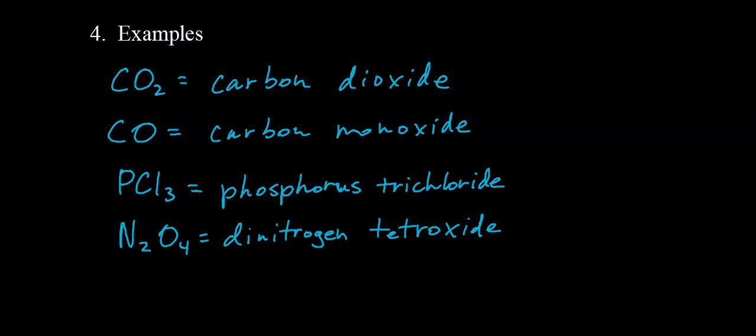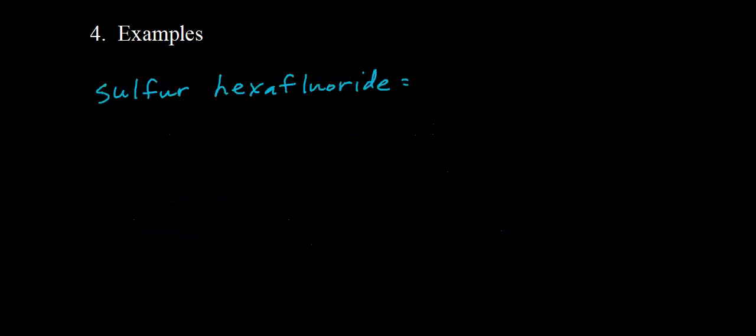Let's go the other way around — it's just as easy. What if I give you the name of a molecular compound? Let's write the formula. Writing formulas for molecular compounds is much easier than writing formulas for ionic compounds. Everything we need to write the formula is given to us in the name. We have sulfur hexafluoride. How many sulfurs? Just one. The second element is fluorine — hexa means six. So our chemical formula is SF₆.